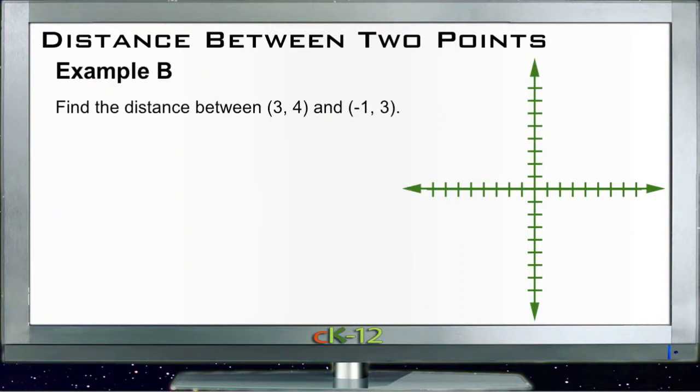Example B is very similar: find the distance between (3, 4) and (-1, 3). So (3, 4) is somewhere around here and (-1, 3) is right here. In this case our x coordinate is going to be from here to here and our y is going to be really short, and then c will run this way.